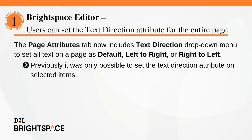To help users set the directionality of all text on a page when creating content or widgets, the Brightspace Editor Page Attributes tab now includes a new text direction drop-down menu that allows users to set all text on a page as default, left to right, or right to left. Previously, it was only possible to set the text direction attribute on selected items.